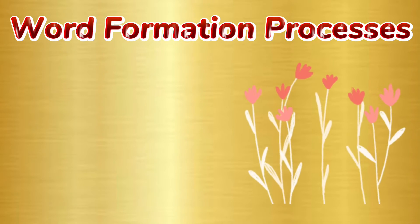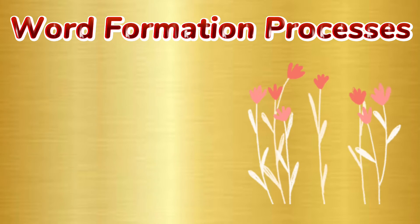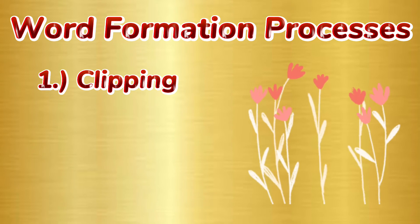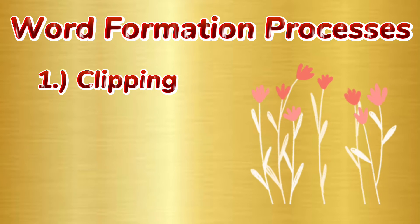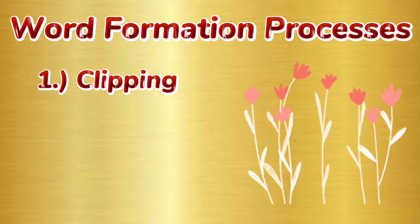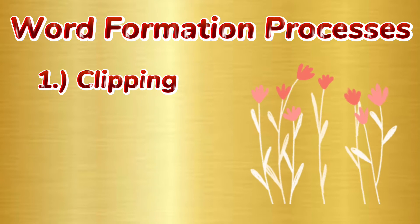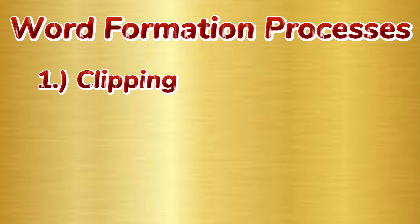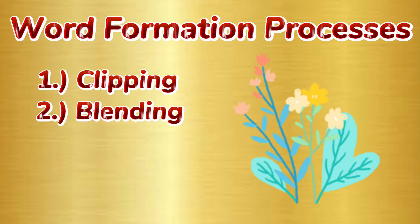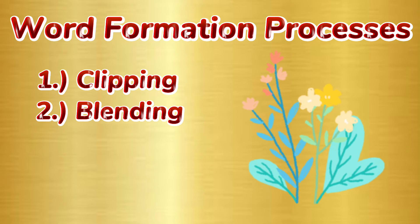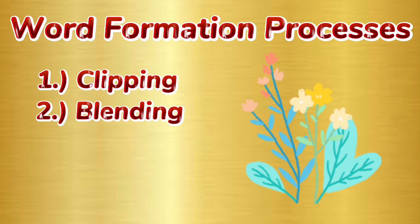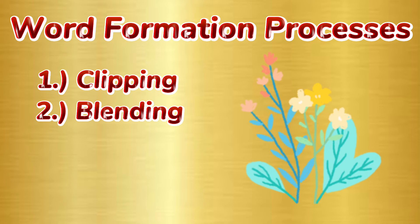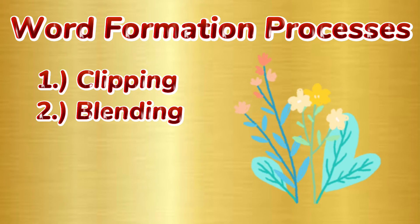Let's have a quick recap of the five word formation processes that we have taken up. First, clipping — it is a process of forming a new word by clipping off part of an existing word, also known as truncation or shortening. The second is blending, which involves joining two words together by taking parts of both words and combining the parts into a new whole. The result of this process is known as a blend.